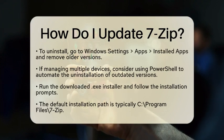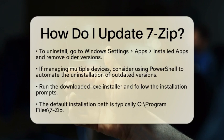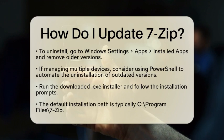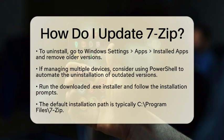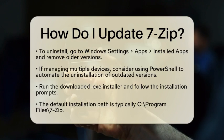Once you have the installer downloaded, it is time to uninstall any older versions of 7-Zip that you may have. You can do this manually by going to Windows Settings, then Apps, and selecting Installed Apps. Locate any older versions of 7-Zip and uninstall them. If you are managing multiple devices, you can use PowerShell to automate this process. A script can help detect and remove outdated versions while keeping the latest one intact.